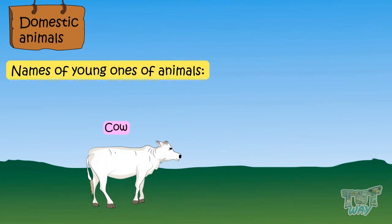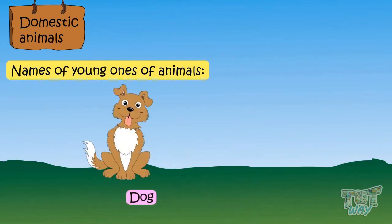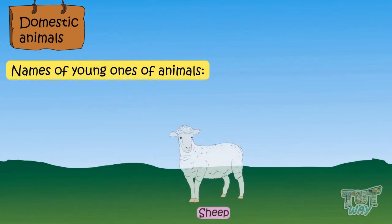Young one of a cow is called calf. Young one of a cat is called kitten. Young one of a dog is called puppy. Young one of a sheep is called lamb.